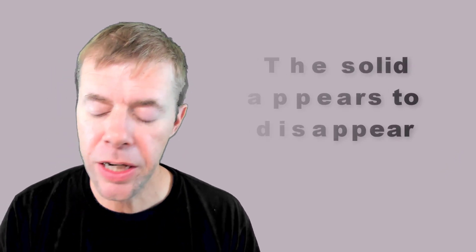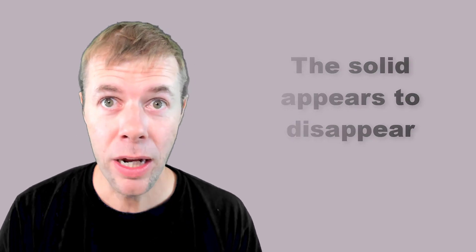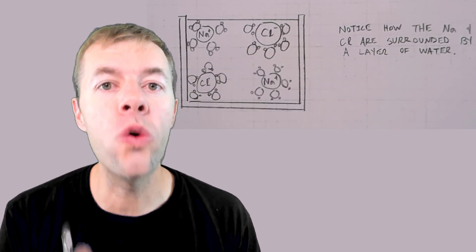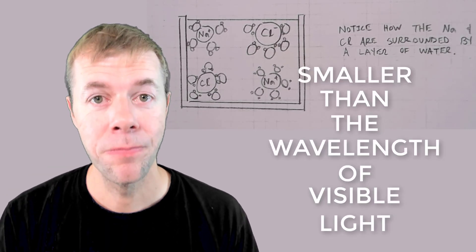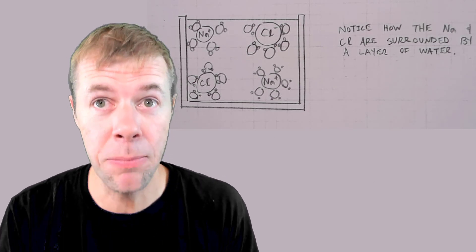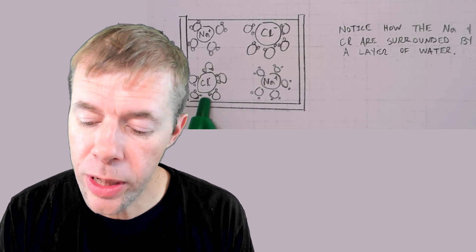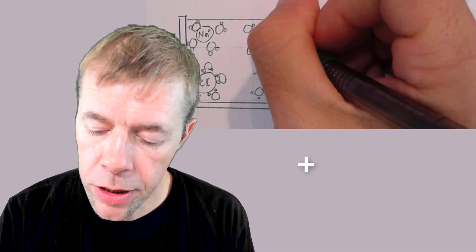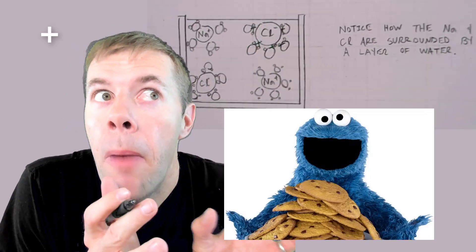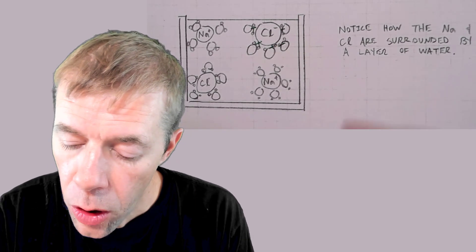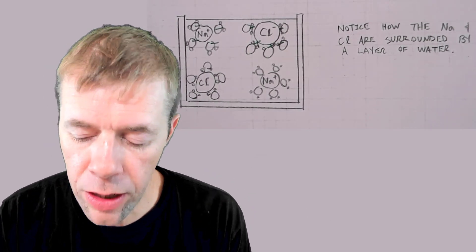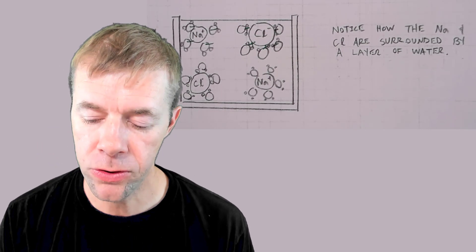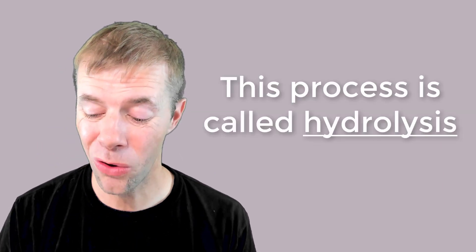The solid appears to disappear — you can't see it anymore. It appears to dissolve. What that really means is that it's intimately mixed. These individual ions are so small they are smaller than the wavelength of visible light, so we can't see them anymore — but they're still there. Every one of these chlorides or sodiums is now surrounded by water molecules hugging them, with the positive side orienting toward chloride and the negative side toward sodium. And they swim and move to different parts of the container. This process is called hydrolysis — this is also called dissolving.